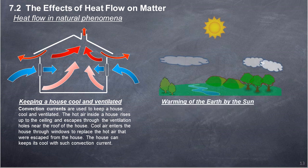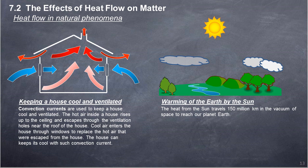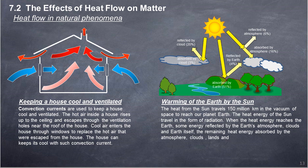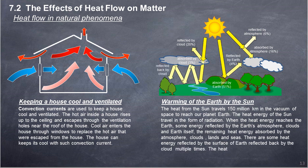Warming of the Earth by the Sun: heat from the Sun travels 150 million km through the vacuum of space to reach our planet Earth, in the form of radiation. When the heat energy reaches the Earth, some is reflected by the atmosphere, clouds, and Earth itself; the remaining heat energy is absorbed by the atmosphere, clouds, lands, and seas. Some heat energy reflected by the Earth's surface is reflected back by clouds multiple times. The heat energy absorbed by the Earth, atmosphere, and clouds keeps our planet warm.